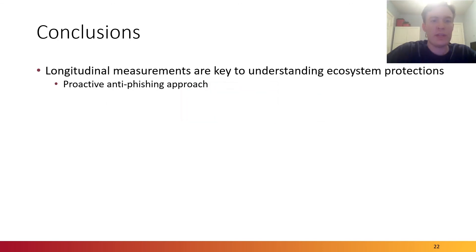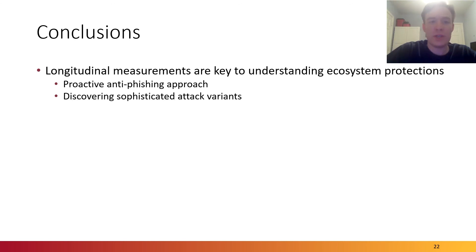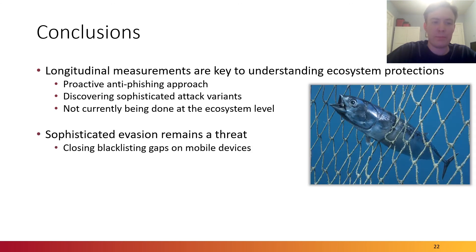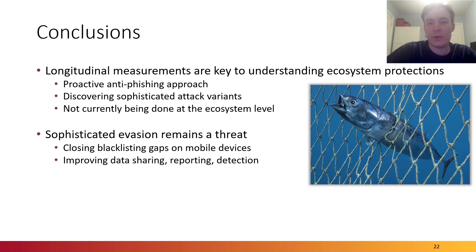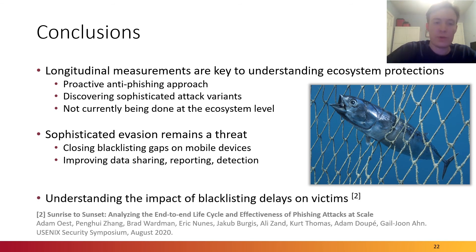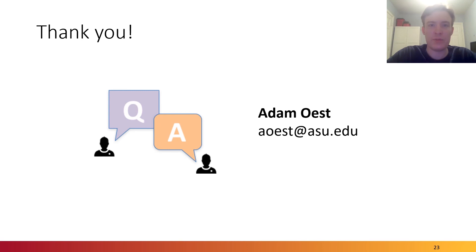In conclusion, we believe that longitudinal measurements are key to understanding the current protections offered by the anti-phishing ecosystem, and they support a proactive anti-phishing approach which can be used to discover new sophisticated attack variants. These kinds of measurements are not currently being done at the ecosystem level, and it's exactly what Phishtime is designed to support. Sophisticated evasion in phishing remains a key threat, and it's important to close blacklisting gaps on mobile devices and also improve data sharing, reporting protocols, and detection methods. In this work, we did not attempt to understand the impact of blacklisting delays on victims themselves, but this is discussed in another paper at this conference. Thank you very much for listening.